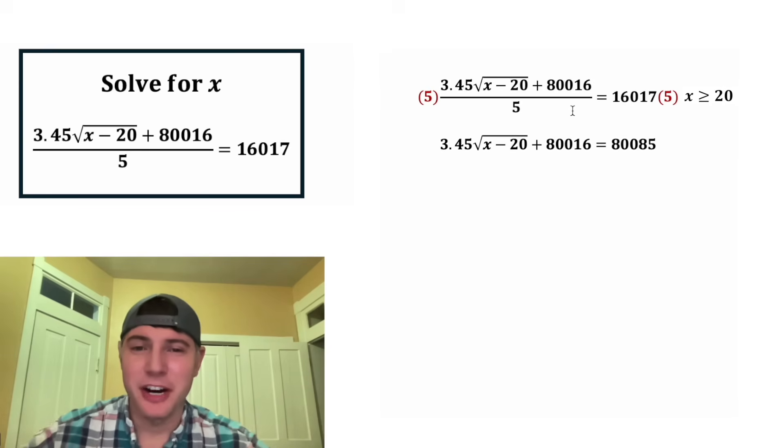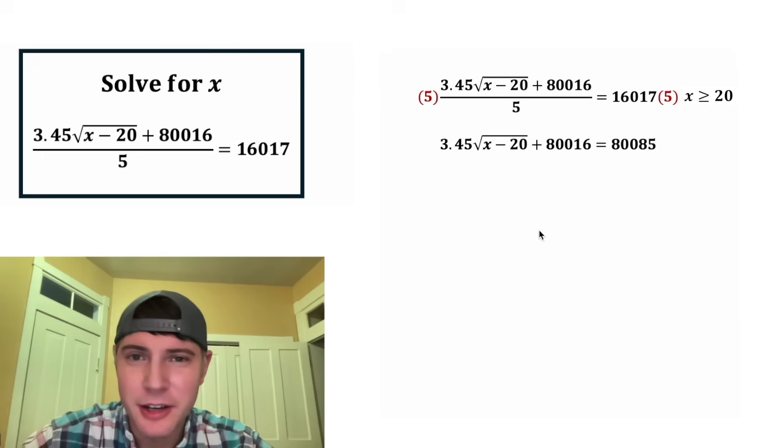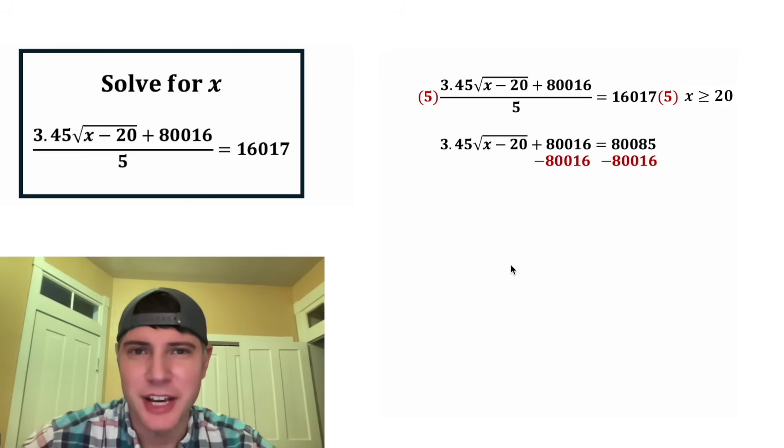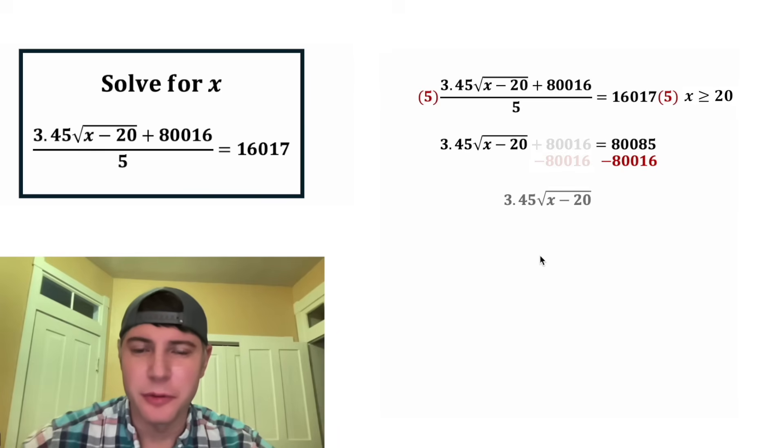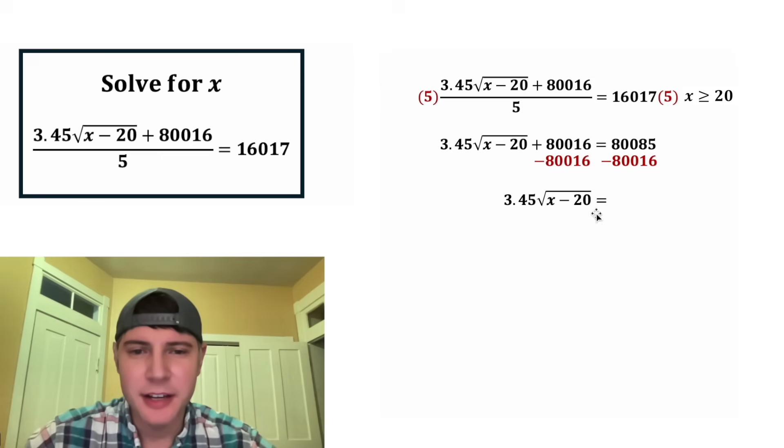So now that we got rid of that fraction, let's figure out what we're trying to do. We are trying to solve for x. So we gotta get rid of all this stuff. First, let's subtract 80,016 from both sides of the equation. On the left-hand side, these will cancel each other out, so we're left with 3.45 square root of x minus 20. And on the right-hand side, 80,085 minus 80,016 is 69.